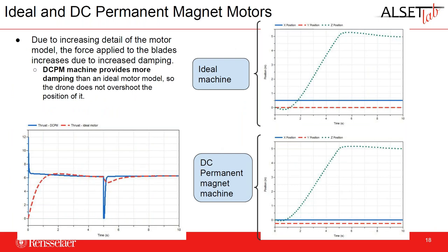Next we looked at how the complexity and level of modeling detail affect motor output. Using ideal and permanent magnet DC motors, we examined how their physical response changed in reference tracking. Due to the increasing detail of the motor model, the force applied to the blades increases due to higher damping when using the DC permanent magnet motor over the ideal motor — visible in the thrust plot on the left, showing significantly increased force from the damping. This also propagates into the reference tracking: the ideal machine has more overshoot because of less damping applying less thrust to the drone.